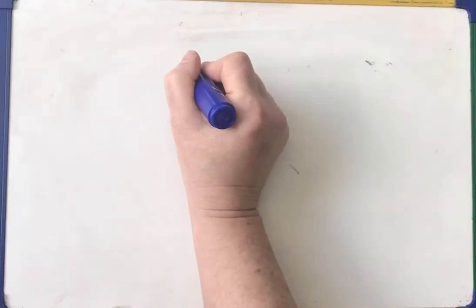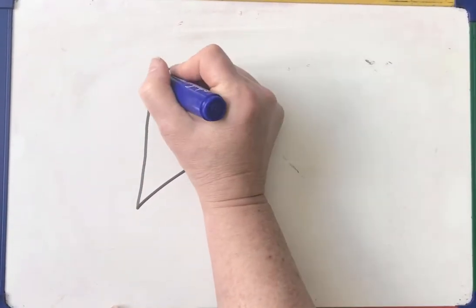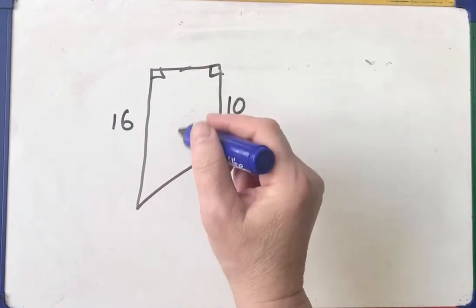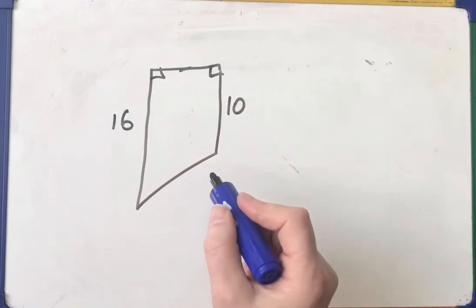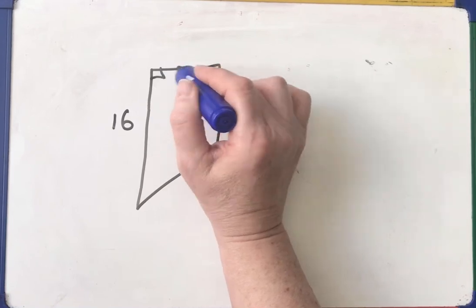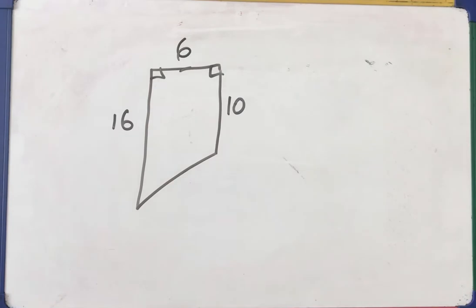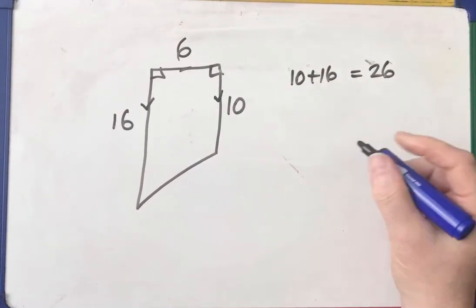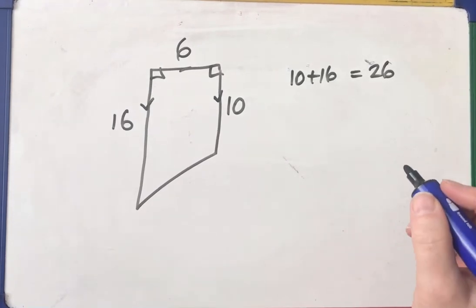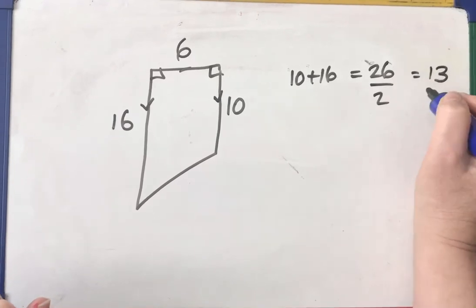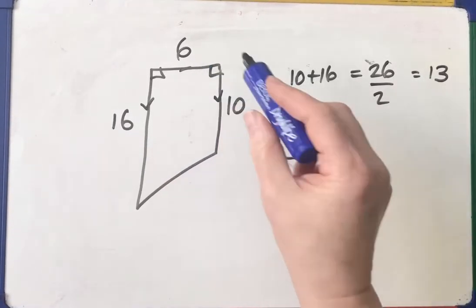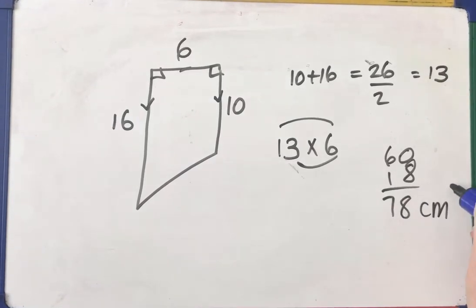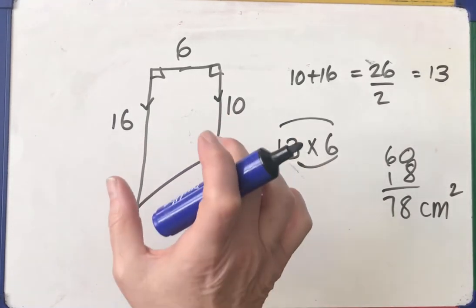Let's have a look at another one. Here's a trapezium. The right angles are here. If that's 10, and that was 16 — this slant distance I'm not going to tell you because I'd have to work that out using Pythagoras. So I'm just going to call the perpendicular height 6. Add the parallel sides: 10 plus 16 is 26. Halve it — half of 26 is 13. Then multiply 13 by 6. 10 times 6 is 60. 3 sixes are 18. 78 centimetres squared. So half the sum of the parallel sides times the perpendicular distance.